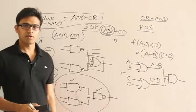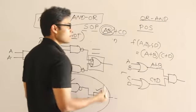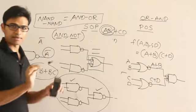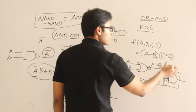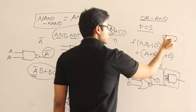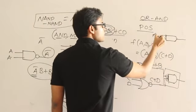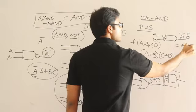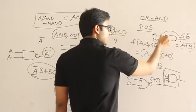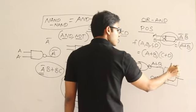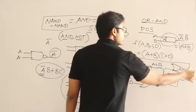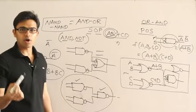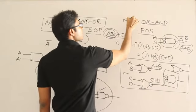The same logic applies to OR-AND realization. If you place bubbles at the OR gate outputs and before the AND gate, the function remains unchanged. The AND gate with negated inputs gives A'·B', which equals (A+B)' — that is a NOR gate. So the OR-AND realization can be converted to NOR-NOR realization: any function expressed as product of sums can be implemented using only NOR gates.